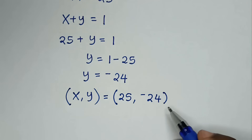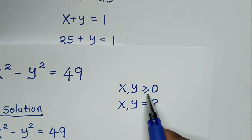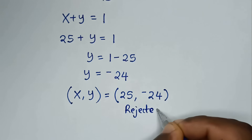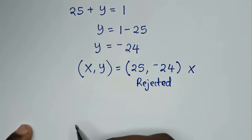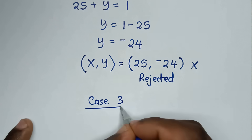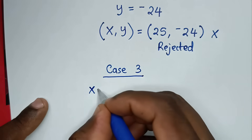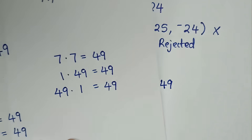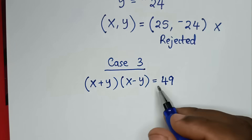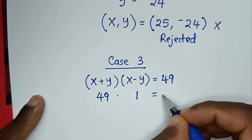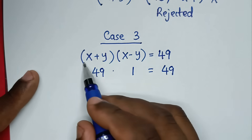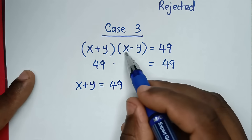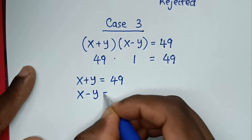Note that the condition from our problem requires x and y to be greater than or equal to 0, but y = -24 is negative, less than 0. So this solution is rejected. Now let's solve case 3. From the equation (x + y)(x - y) = 49, in case 3 we have 49 times 1. Comparing gives x + y = 49 and x - y = 1.